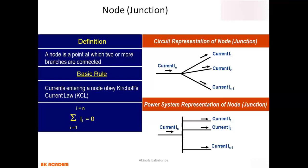A node is a point at which two or more branches are connected. As we have discussed in class, when we have a node with many branches connected to it, we have a rule that all the currents entering a node must be equal to the current within the node. This explains what we refer to as Kirchhoff's Current Law.